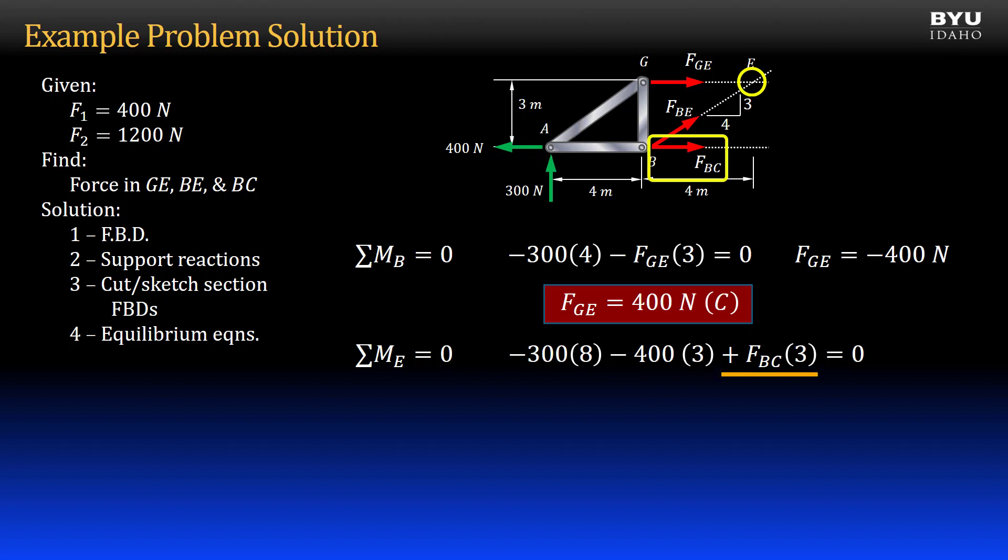and force BC times its moment arm, 3 meters, positive by our convention, all equal to zero. I get that force BC is positive 1200 newtons. So member BC is in tension.